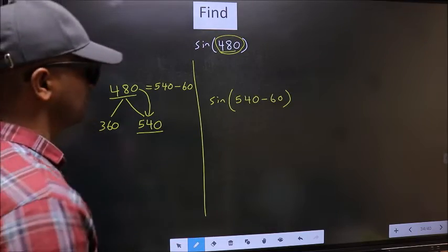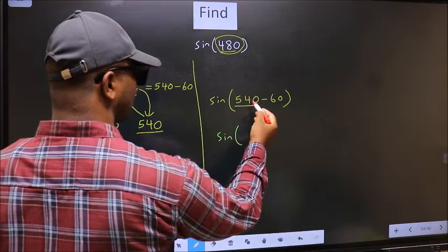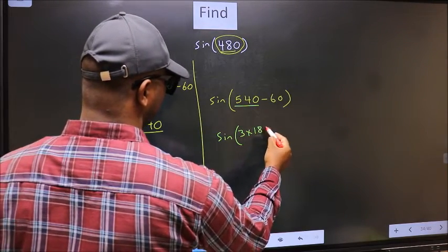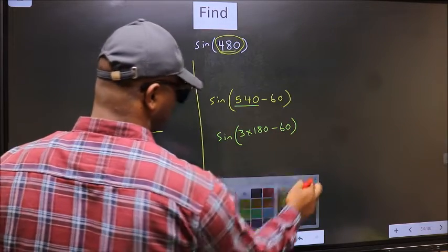Next. Sin. In place of 540, now we should write 3 into 180 minus 60.